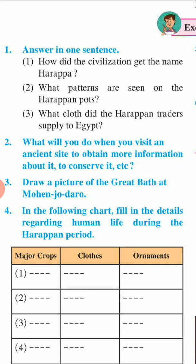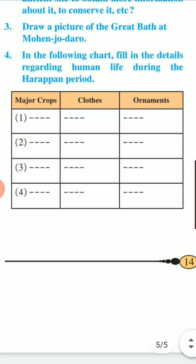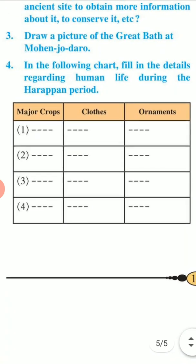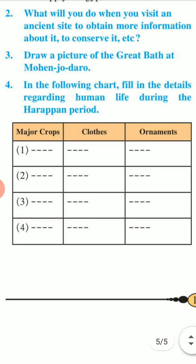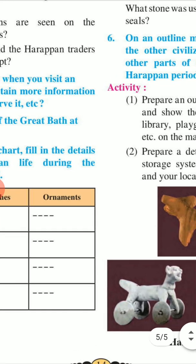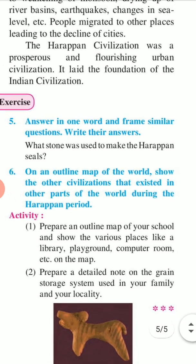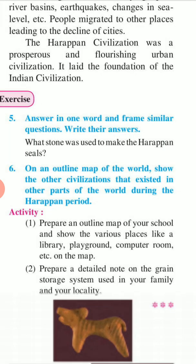Fourth: In the following chart, fill in the details regarding human life during the Harappan period. There are three regions which you have to fill: major crops, cloths, and ornaments. Fifth question: Answer in one word and frame similar questions — write their answers. What stone was used to make Harappan seals?